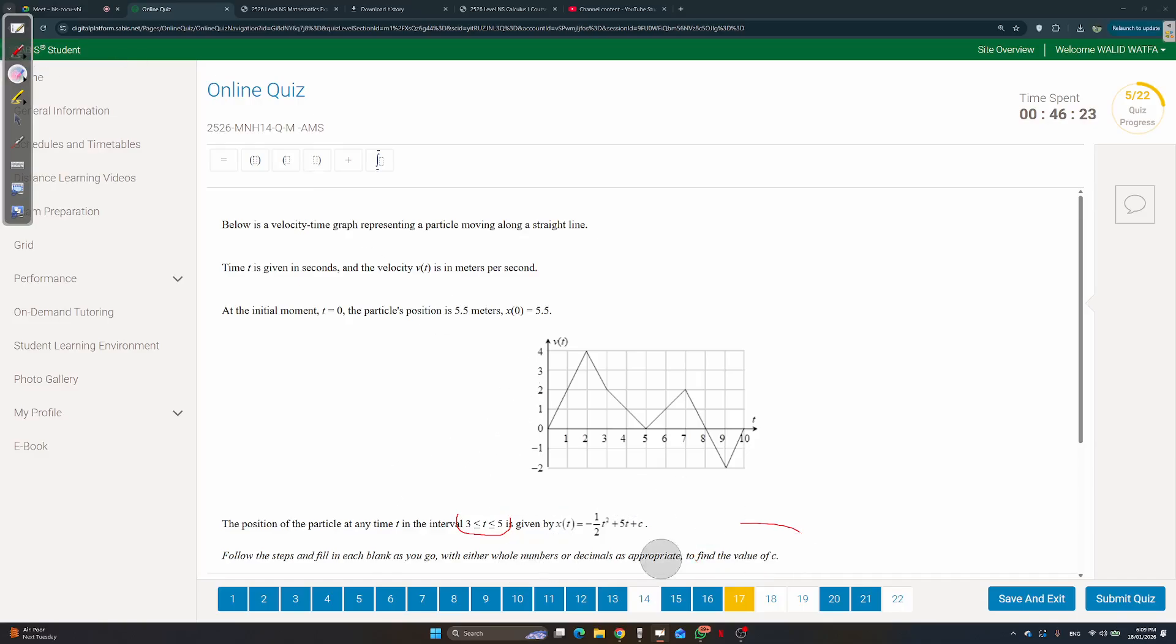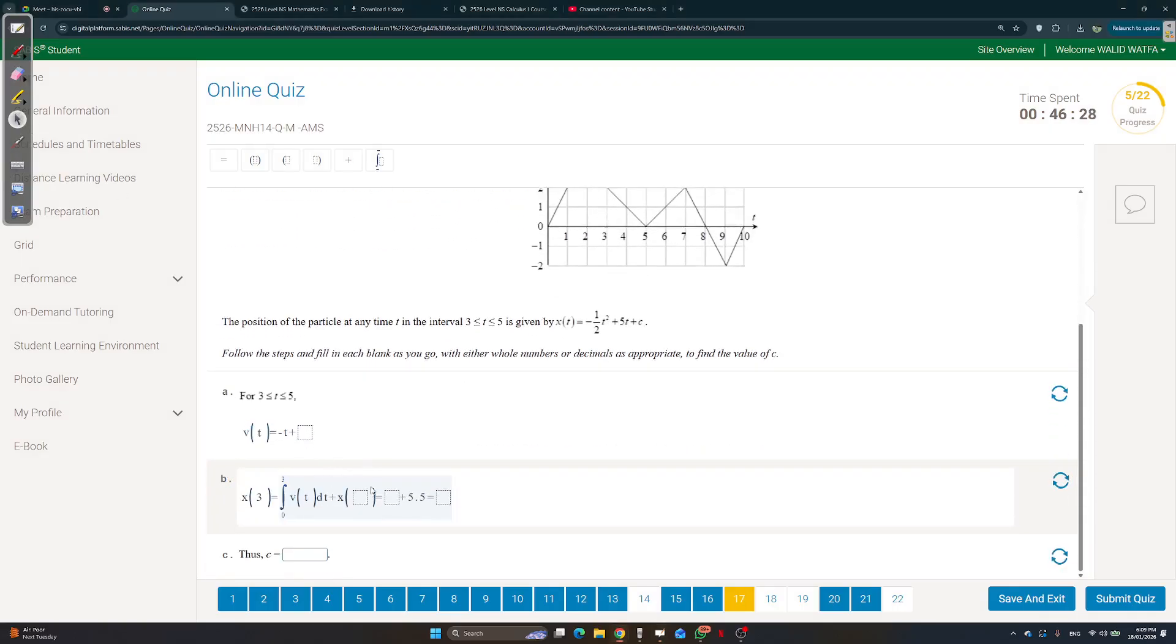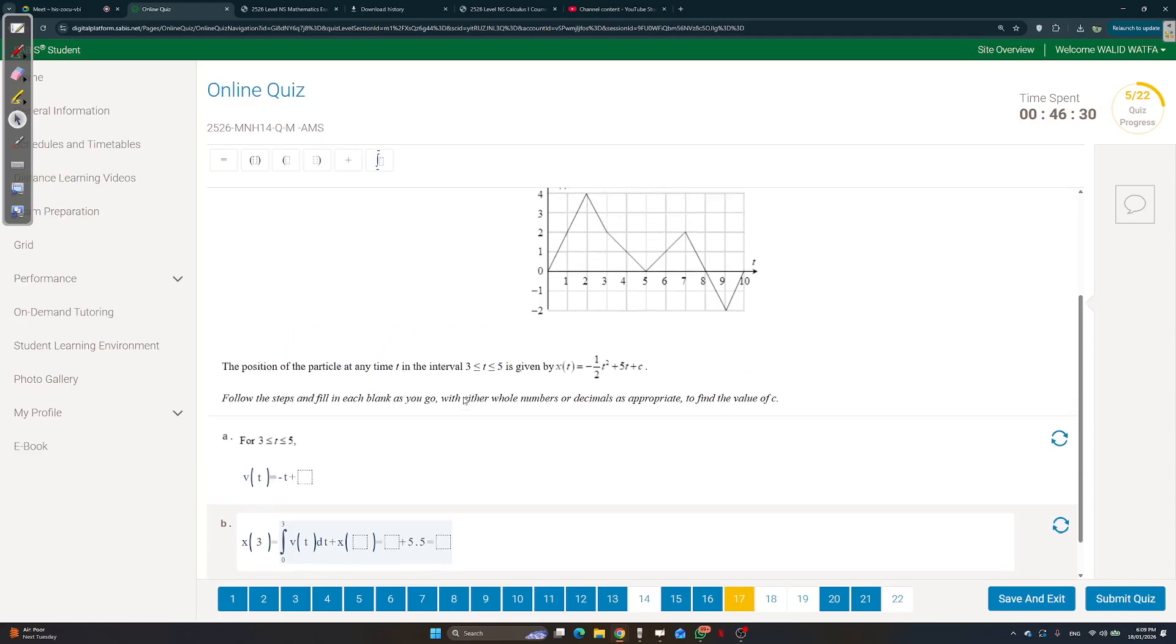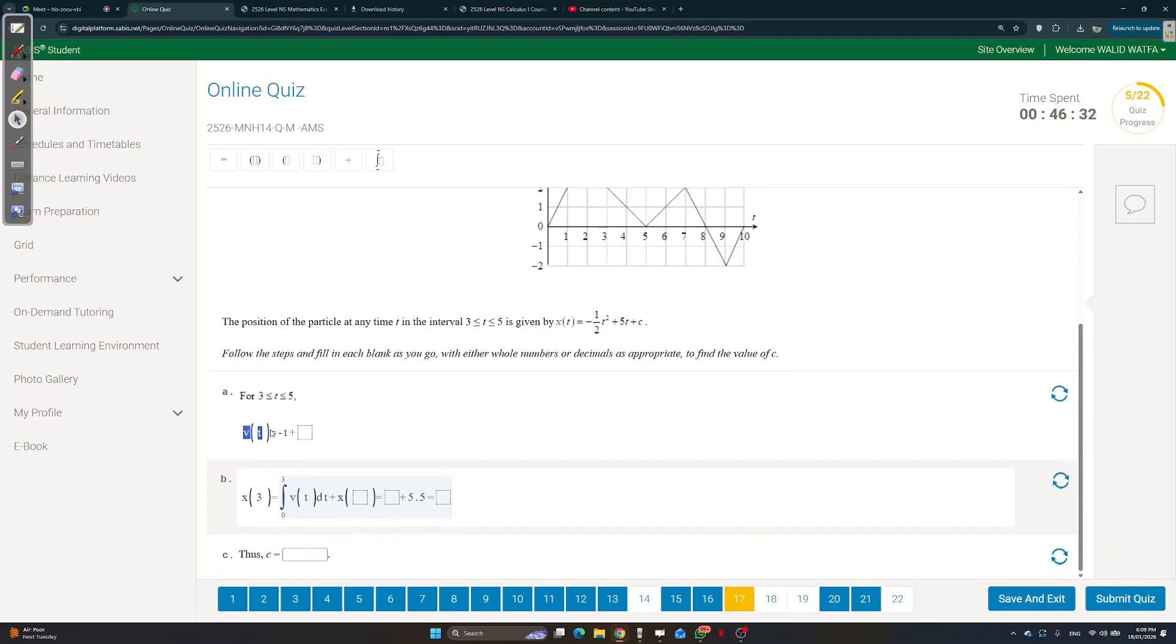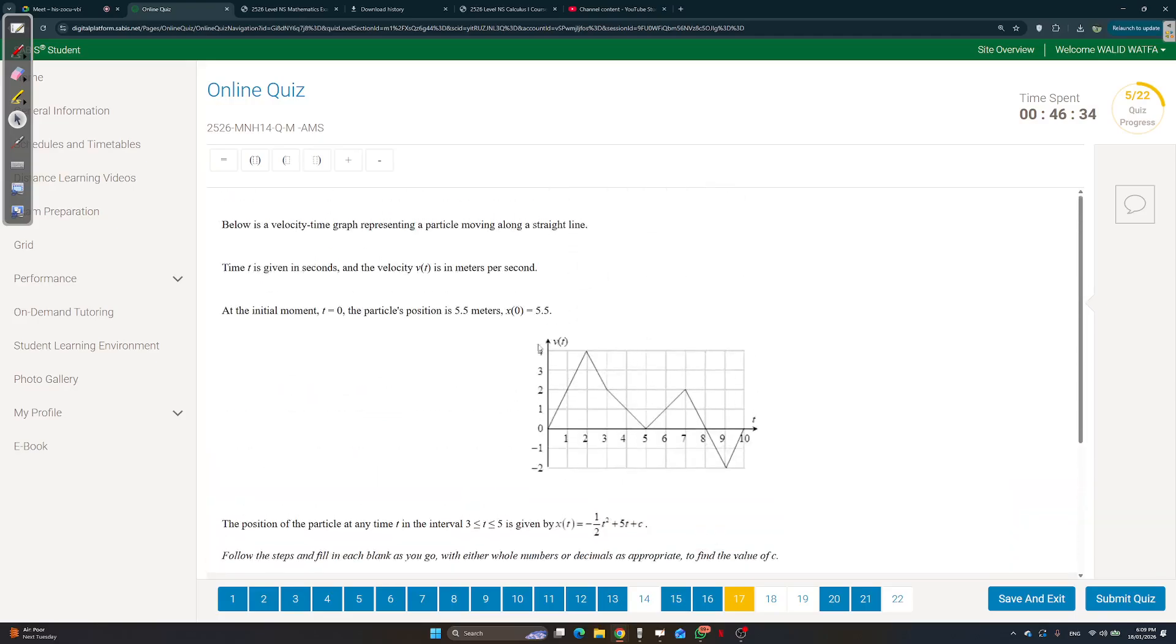The thing is, there's many ways to do it, but if you want to solve this question in this way, you're restricted to one step of solving. The first thing they're asking you to find is what is the expression for the velocity between 3 and 5.